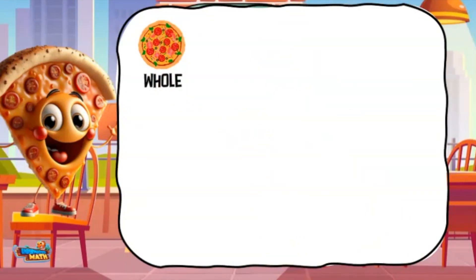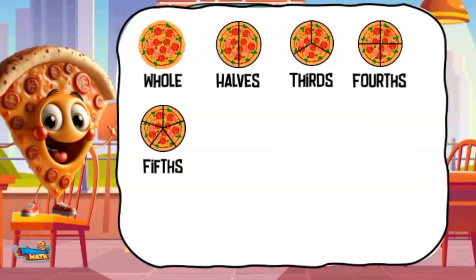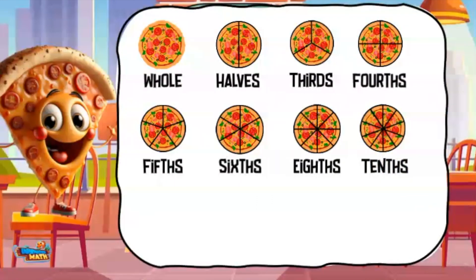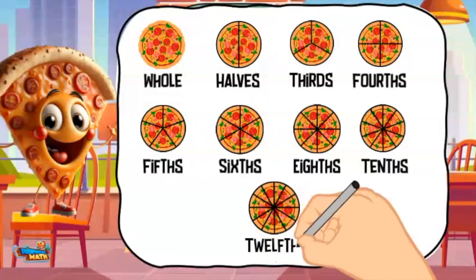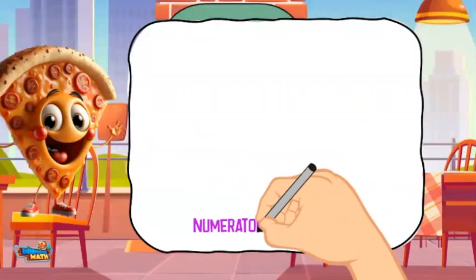Here are some fraction words that may be helpful. The whole is the part of the fraction being broken into parts. If the whole is broken into two equal parts it is called halves, three parts is thirds, four equal parts are fourths, five equal parts are fifths, six equal parts are sixths, eight equal parts are eighths, ten equal parts are tenths, and twelve equal parts are called twelfths. These terms are used to describe the denominators of a fraction.